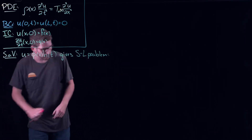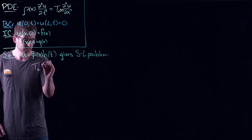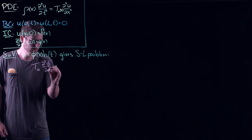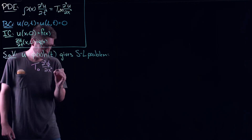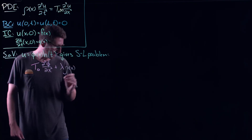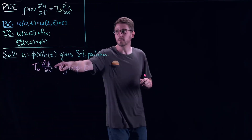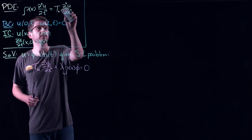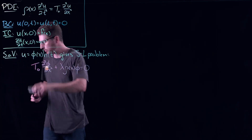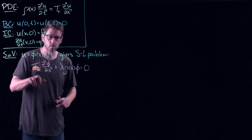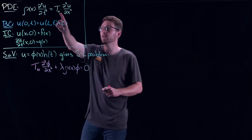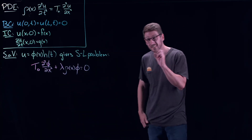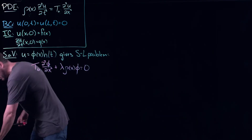In this case, the Sturm-Liouville problem looks like: T₀ times the second derivative of φ with respect to x, plus λ ρ(x) φ = 0. I'm going to assume T₀ is constant to simplify things. If you wanted T to be a function of x, you could divide it off and absorb it into the ρ term so that everything lines up as a proper Sturm-Liouville problem. Just be a little careful about how you put it together.